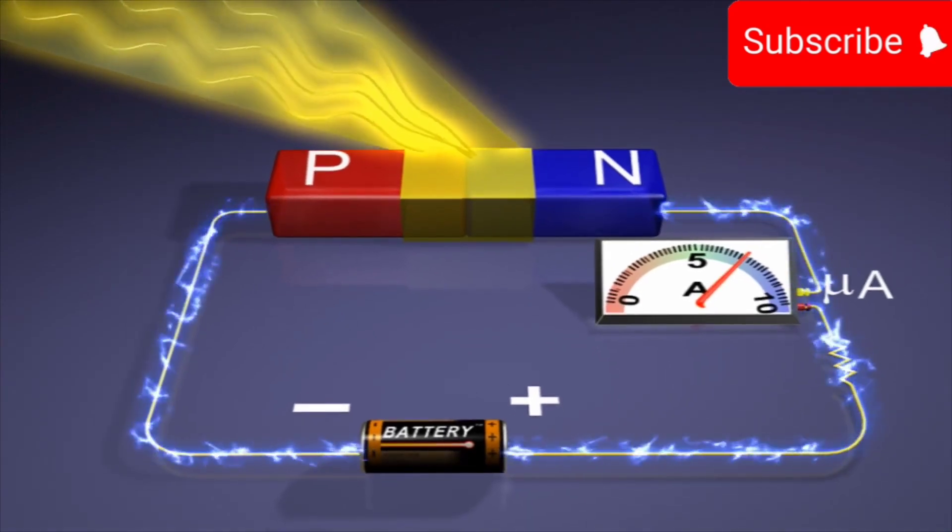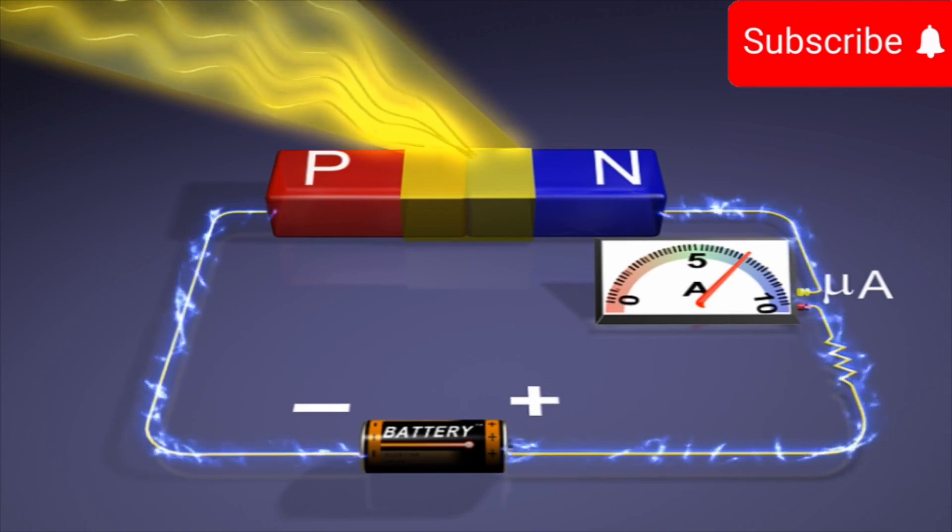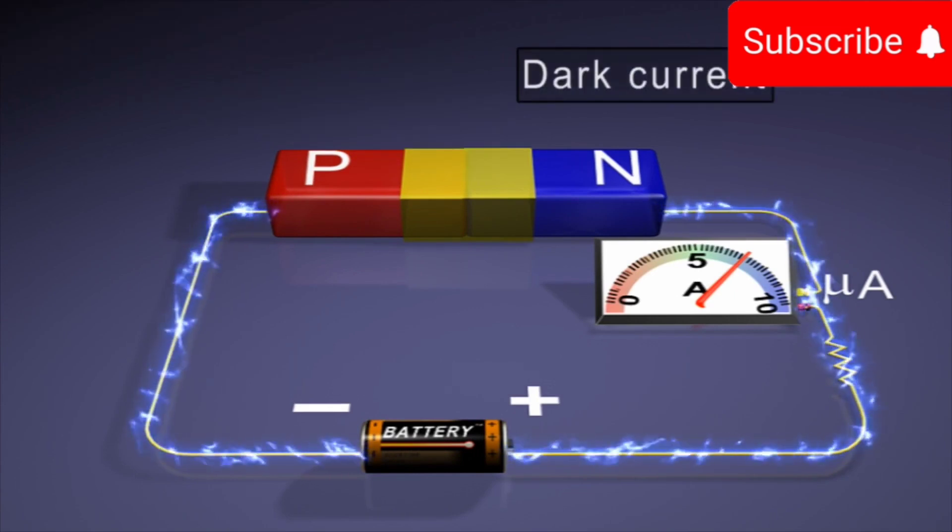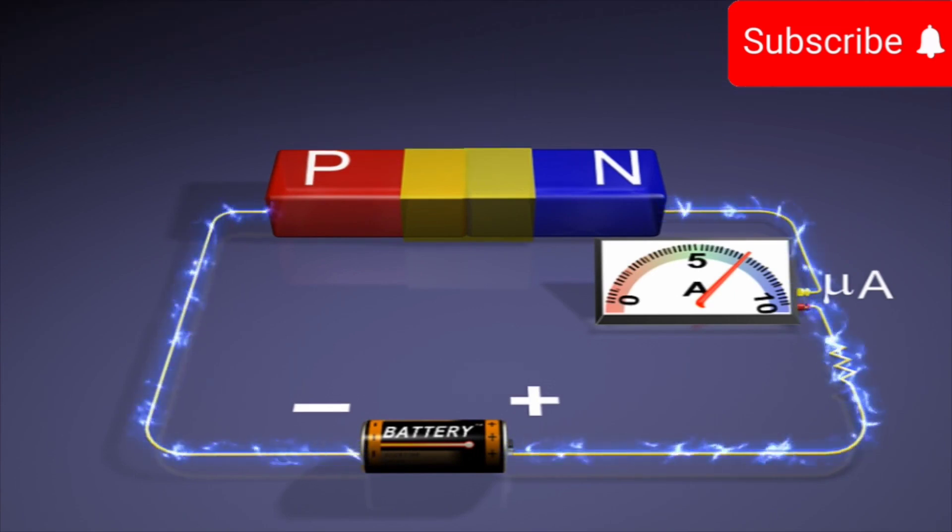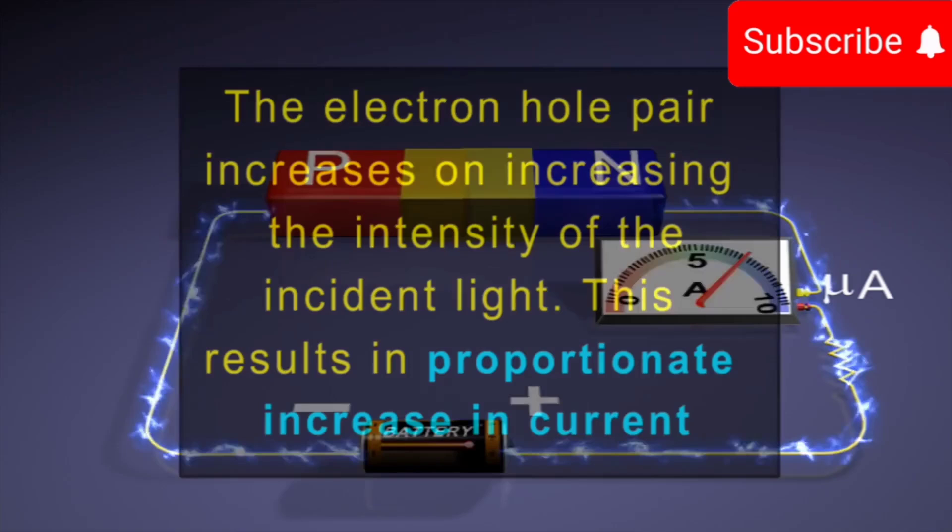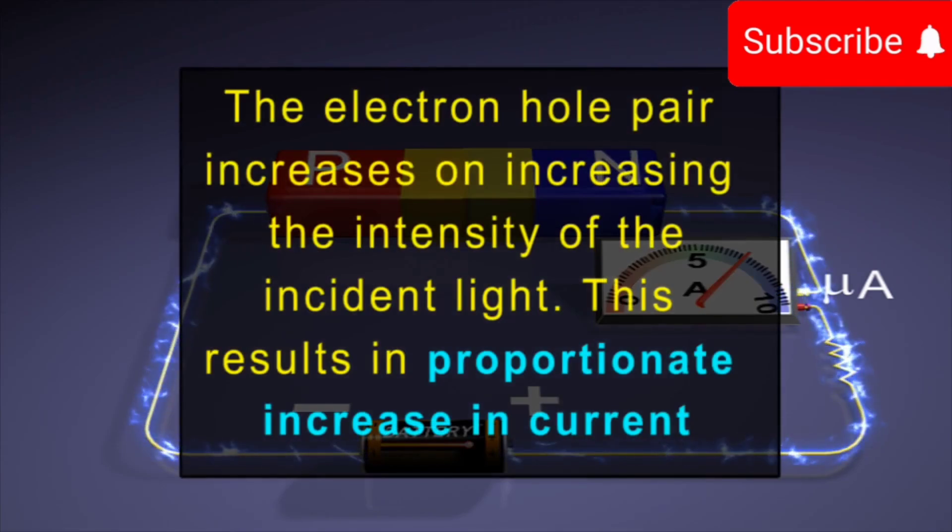The reverse current flowing through the diode in the absence of the incident light is known as dark current. The electron hole pair increases on increasing the intensity of the incident light. This results in proportionate increase in current.